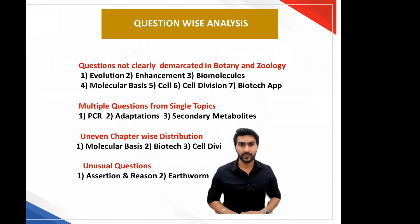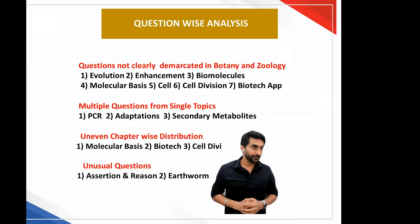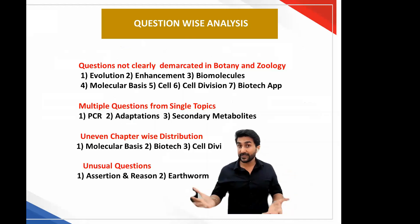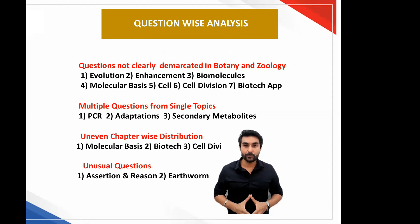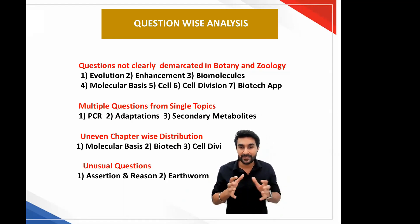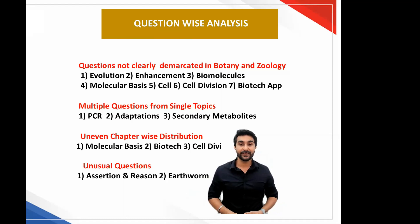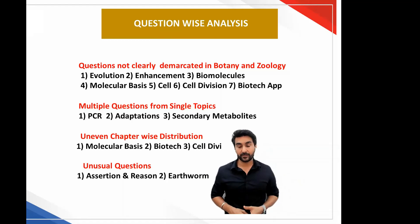Now, a few observations about the paper which were different and not so convincing in my opinion. In the 2021 NEET paper, they had divided it into botany and zoology sections. Though they had dedicated botany and zoology sections, if you go through the paper you would find the questions were not clearly demarcated. The question on evolution — one was asked in the botany section and the other in zoology. In the enhancement in food production chapter, one question on plant breeding was asked in the zoology section and mutation breeding was asked in the botany section.